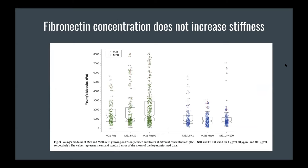The next figure tests different concentrations of fibronectin and sees the effect on cell stiffness. The graph shows that increasing or changing the fibronectin concentration doesn't really have a significant effect on how stiff the cells are — the differences were not considered significant.